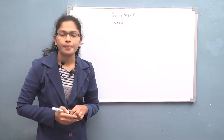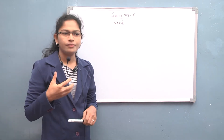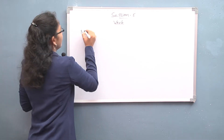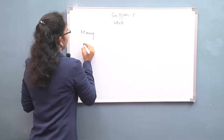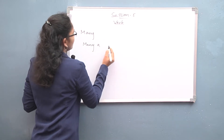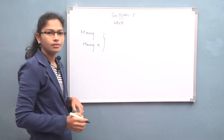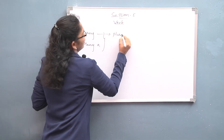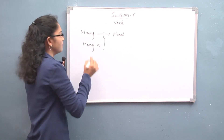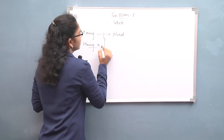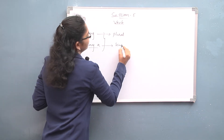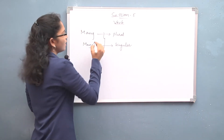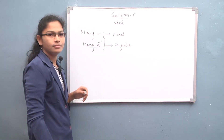In this session on verbs, we are going to discuss 'many a' and 'many'. What is the difference between these two? Many is a plural form, whereas 'many a' is a singular form — because here we have the article 'a', that's why it is singular.